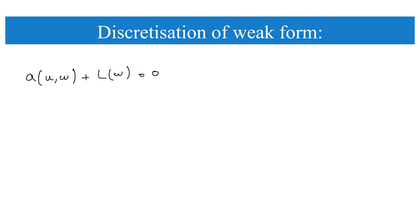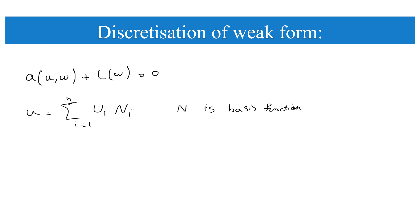The weak form consists of a bilinear term a, which is a function of the solution and the test function, and a linear term. To discretize, we write the solution u as a linear combination of basis functions N_i, for i from 1 to n (the number of nodes).